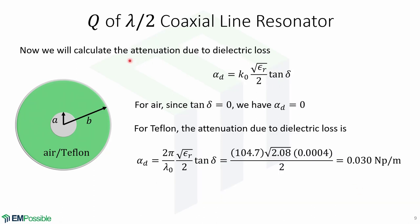Now we calculate the attenuation due to dielectric loss, given by this formula: k0 times the square root of epsilon-r over 2, times the loss tangent. For air, the loss tangent is 0, so the attenuation due to dielectric loss is 0. For Teflon, the attenuation is given by this expression, and plugging in the numbers gives this result.